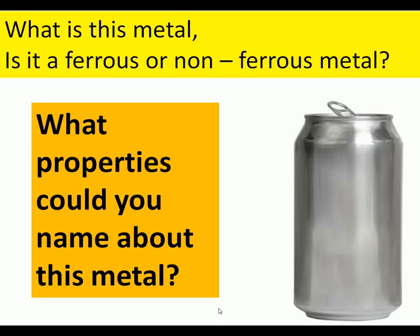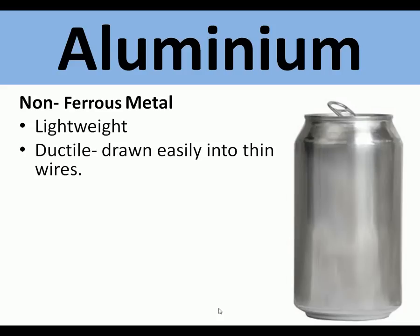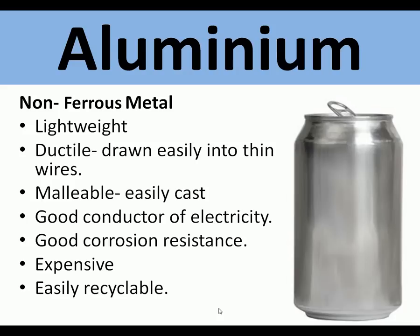Moving on to non-ferrous metals — aluminium is lightweight. Aeroplanes are made of aluminium, and some sports cars now use aluminium instead of mild steel to save weight. It's easily worked, pressed, and can be cast. It's a good conductor of electricity with reasonable corrosion resistance. It is more expensive than mild steel but very easily recyclable — most aluminium cans are recycled.